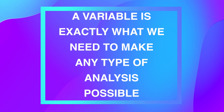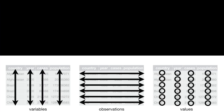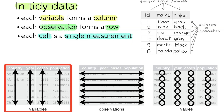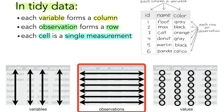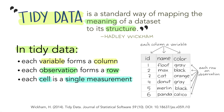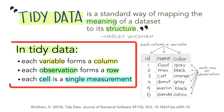Let me make tidy data even easier for you. There are only three simple principles for tidy data. First, each column is a variable. Second, each row is an observation. And last, each cell is a single value, or only one piece of information. For simplicity, let's say that any dataset which does not follow these three rules is messy.